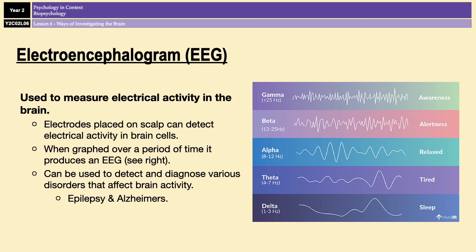Data from EEGs can be used to detect and diagnose a whole host of disorders that affect brain activity. For example, people with epilepsy show spikes of electrical activity, whereas people with degenerative brain diseases such as Alzheimer's show an overall slowing of electrical activity. So EEGs are really helpful for doctors or clinicians to diagnose different types of conditions.